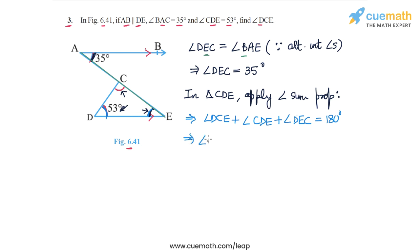So plugging in the values, we get angle DCE plus 53 degrees plus 35 degrees, and this sum is equal to 180 degrees.